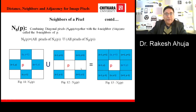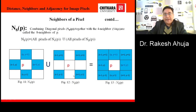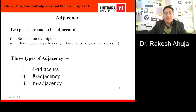Now we will calculate the eight neighbors of pixel p, N8(p). It can simply be calculated by taking the union of all pixels under N4(p) as well as all pixels of ND(p). Then we get all eight neighbor pixels of pixel p. This is N8(p).